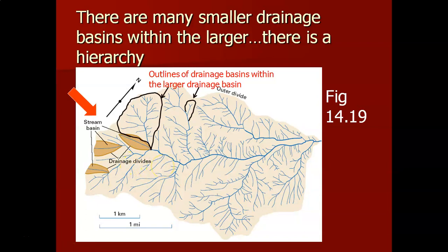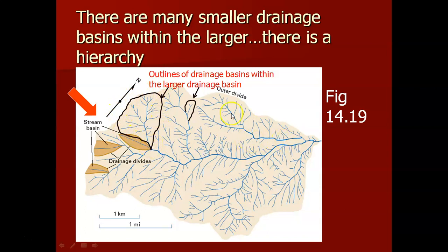Within a drainage basin, you can create a whole hierarchy of different drainage basins — drainage basins within drainage basins. For any tributary, there's got to be some higher elevation, some drainage divide, separating flow between this tributary and the next tributary system. You can go even smaller and identify a tiny drainage basin between two little tributaries. You can draw in a whole hierarchy within the larger one.